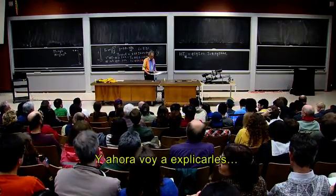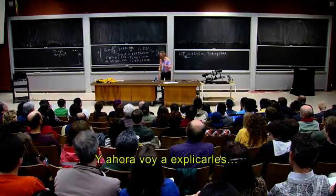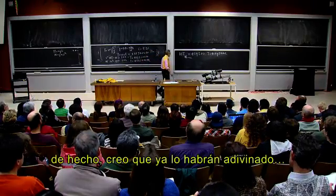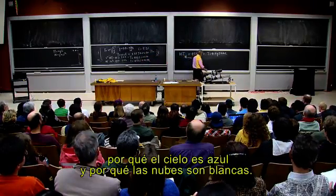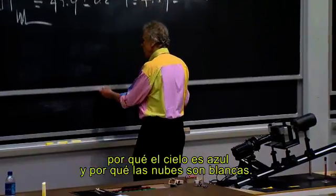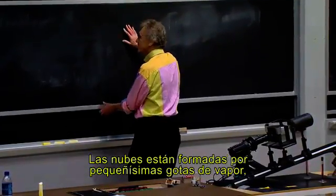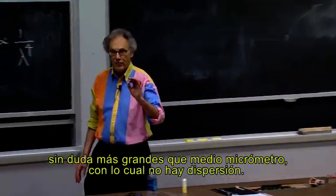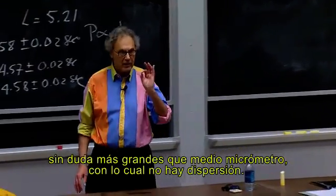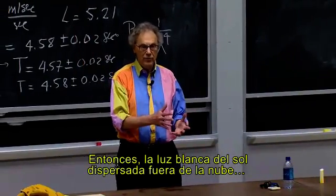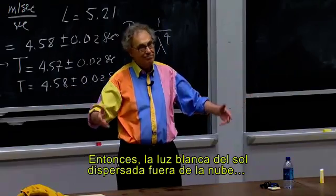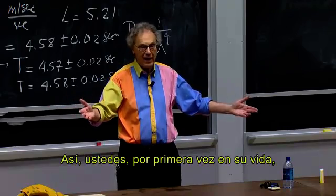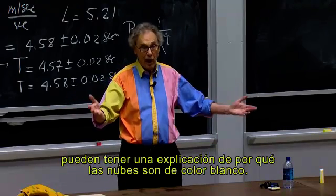Now I'm going to explain why the sky is blue and why clouds are white. Clouds consist of very small water drops, surely larger than half a micron, which is Mie scattering. So the white light of the sun scattered off the cloud remains white — and so, for the first time in your life, you may have an explanation for why clouds are white.